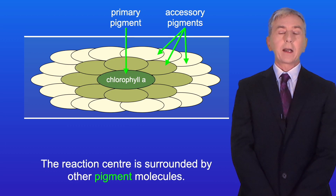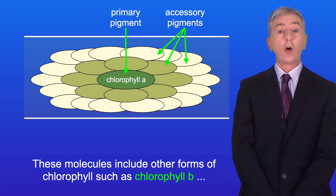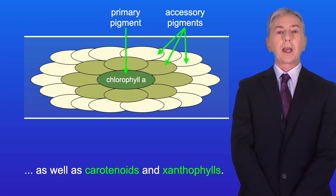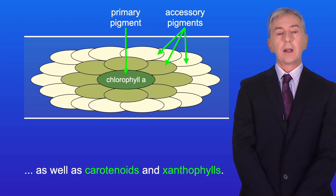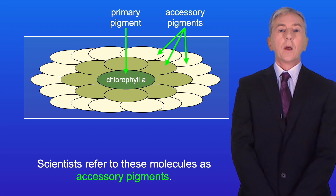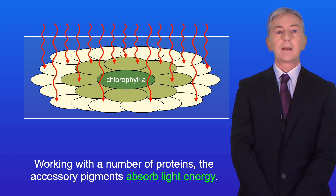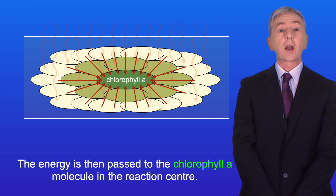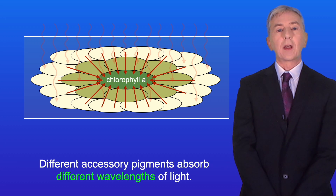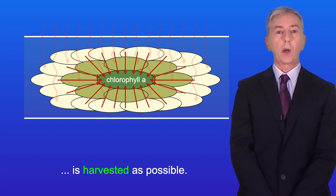The reaction center is surrounded by other pigment molecules. These molecules include other forms of chlorophyll such as chlorophyll B, as well as carotenoids and xanthophylls, and scientists refer to these molecules as accessory pigments. Working with a number of proteins, the accessory pigments absorb light energy. The energy is then passed to the chlorophyll A molecule in the reaction center. Different accessory pigments absorb different wavelengths of light, so by using a range of pigments this ensures that as much light energy is harvested as possible.